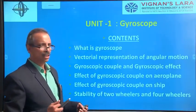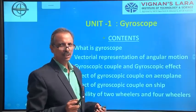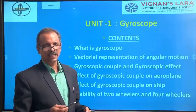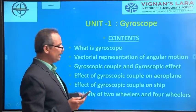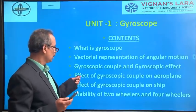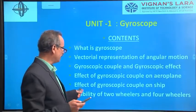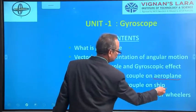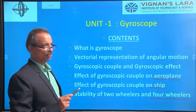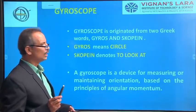Today's lecture will stop with just an introductory part on Unit 1 — what is a gyroscope, what we are going to study in this unit, and how the word gyroscope was coined in the 18th century. The contents of Unit 1 are: what is a gyroscope, gyroscope representation, gyroscopic couple and its effect, and practically how gyroscopic effects are observed in aeroplanes, ships, and four-wheelers.